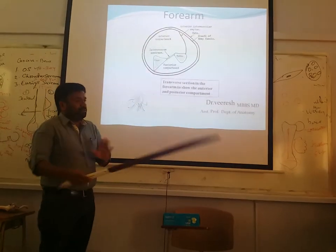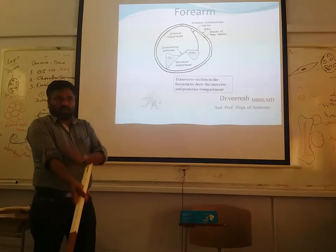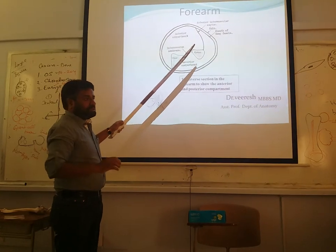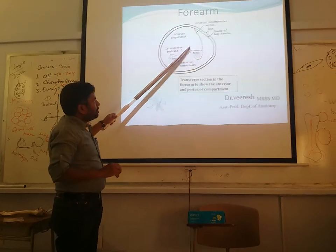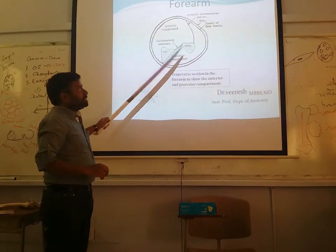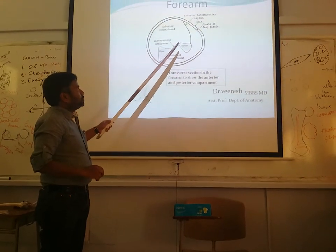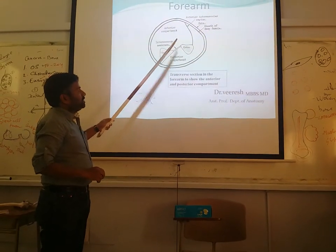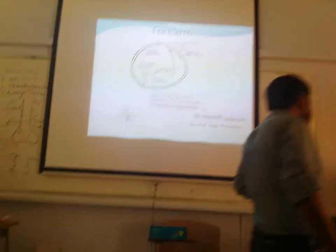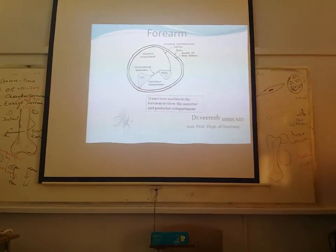So the forearm is completely divided into two compartments which are totally separate from each other — anterior compartment and posterior compartment. Let us study about these two compartments one by one. First we will go into the anterior compartment, also called the flexor compartment.